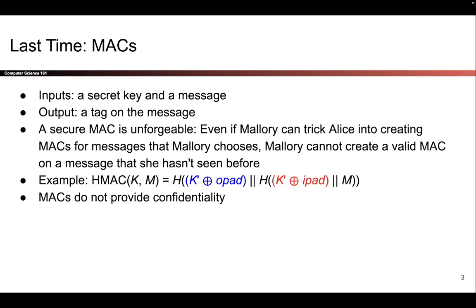So to fix that, we developed MACs, which do provide integrity under our threat model. The input is a secret key and a message, and the output is a tag on the message. We described that secure MACs are unforgeable, and we showed an example construction of MACs based on hashes. Finally, we noted that MACs provide integrity — they do not provide confidentiality.